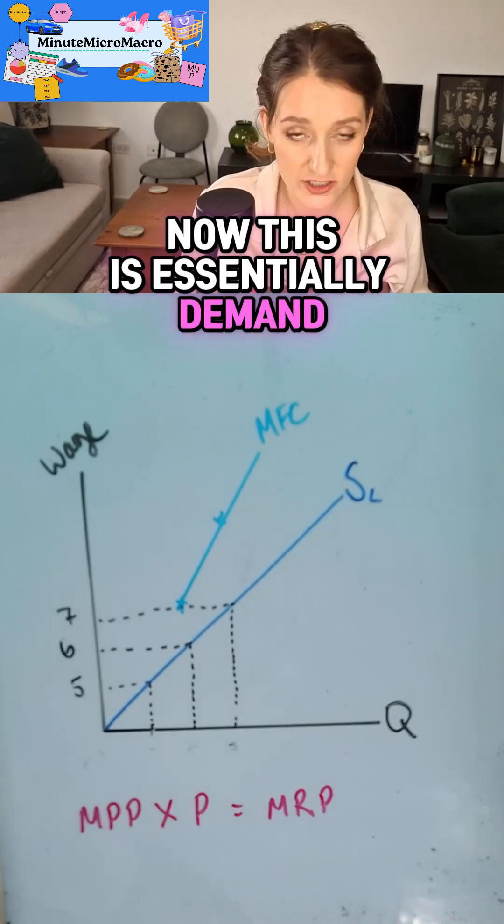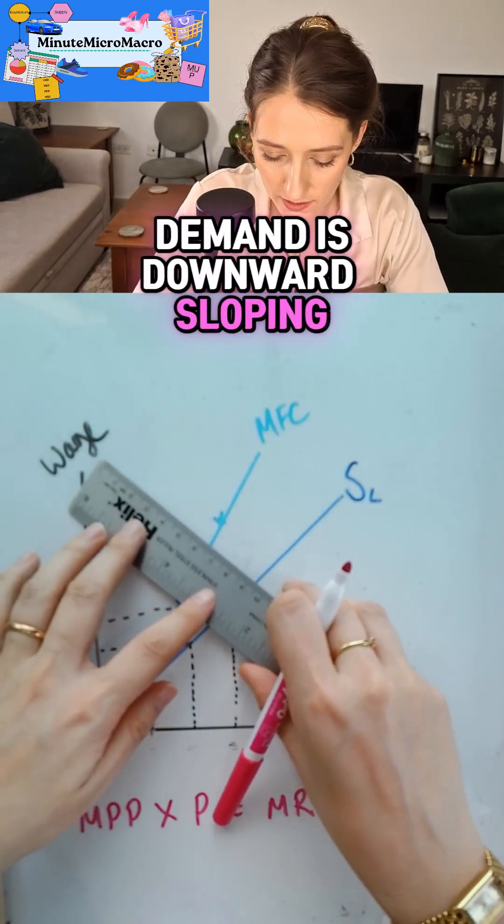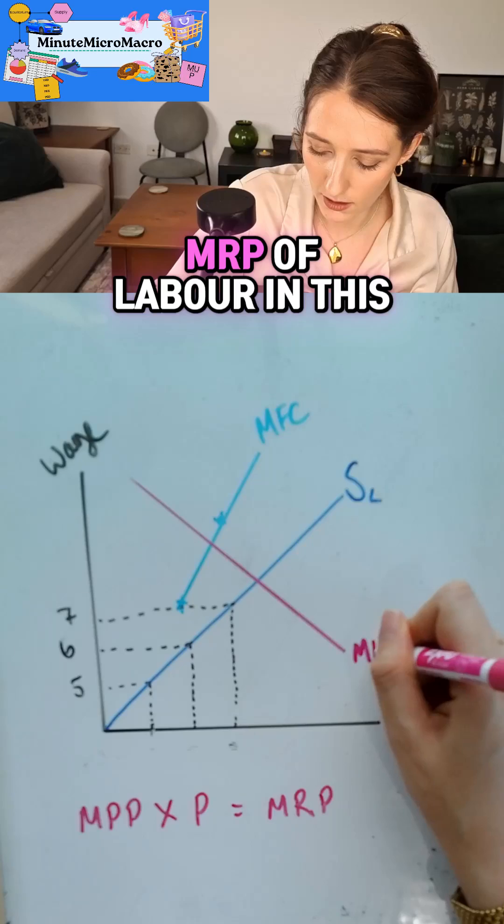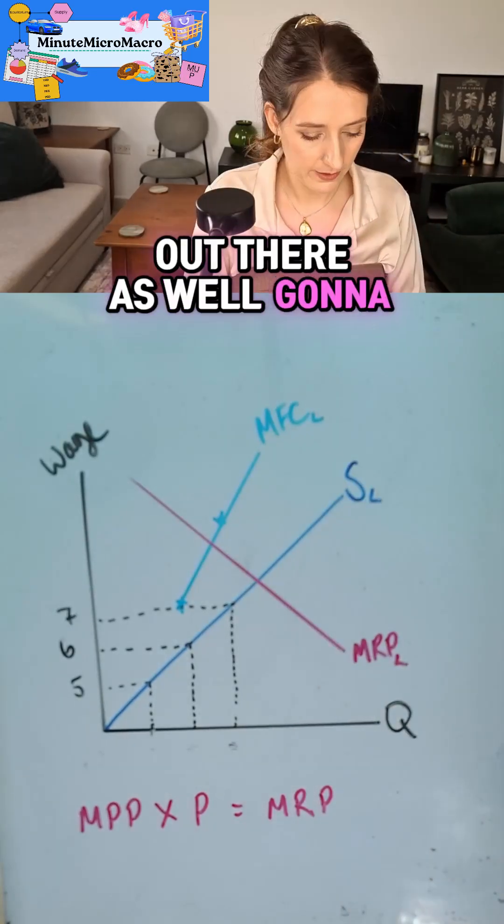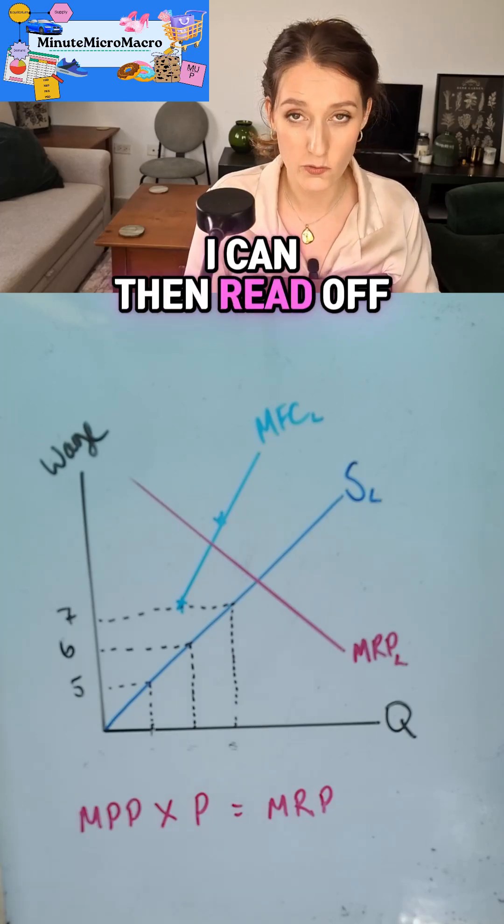Now, this is essentially demand for labor. Demand is downward sloping. And so we have our MRP of labor in this case. I'm going to put a little L there as well. I'm going to tidy up my diagram so I can then read off of it.